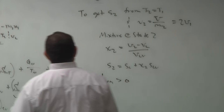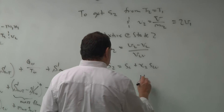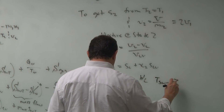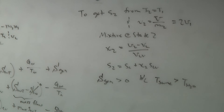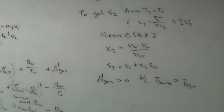The entropy generation must be greater than zero because the temperature of the source (250°C) is greater than the temperature of the water (200°C). It's a similar process to everything we've done: understand assumptions and givens, do mass balance, do energy balance, then do the second law analysis — on a rate basis or not — using Gibbs relations if you don't have tabular data.